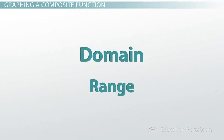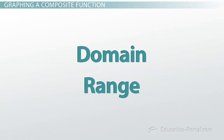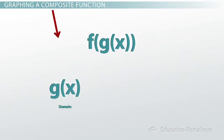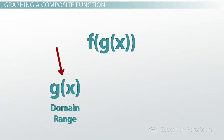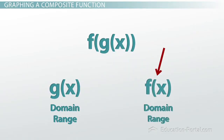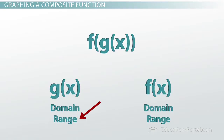What happens to the domain and range of a composite function? If we have f of g of x, the output of g of x — its range — must fall within the domain of f of x. Otherwise, we get a value that f of x doesn't know what to do with.